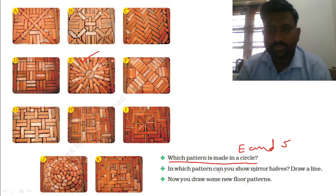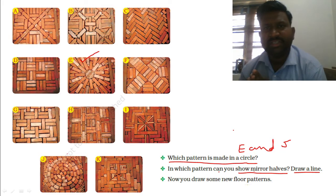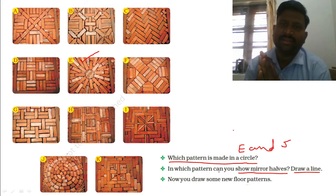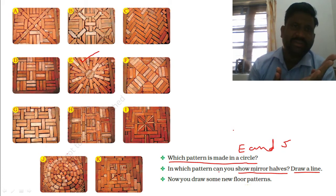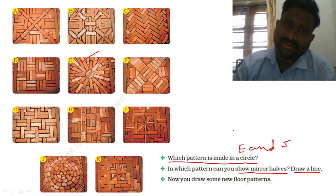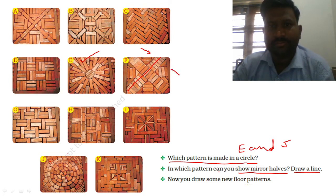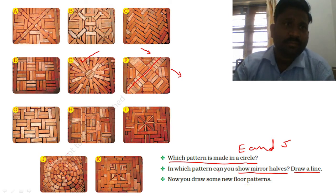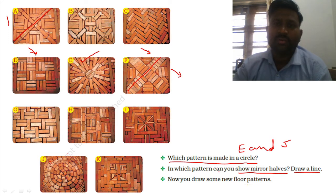In which pattern can you show the mirror halves — draw a line. What is a mirror half? When you see a mirror, one portion looks like the other portion. Observe F — when I put a mirror line here, this portion looks like this portion. Similarly, A can be divided by a mirror line. So A and F can be broken into mirror halves.